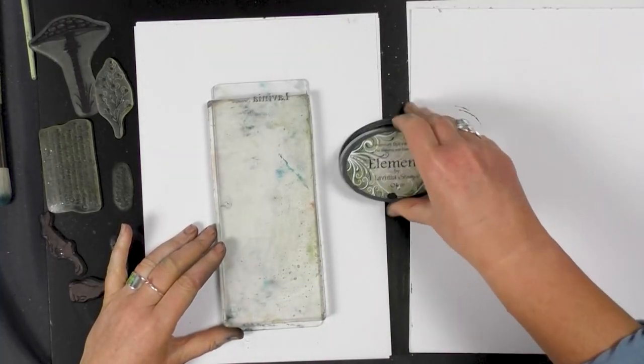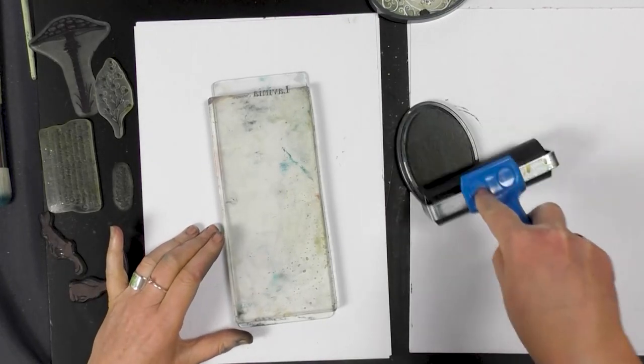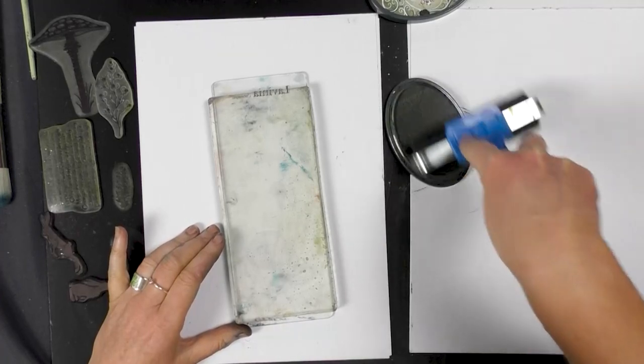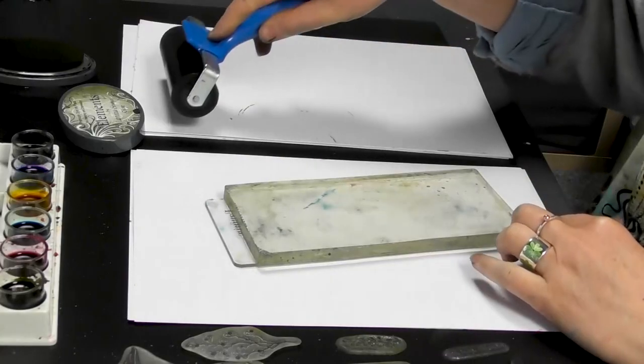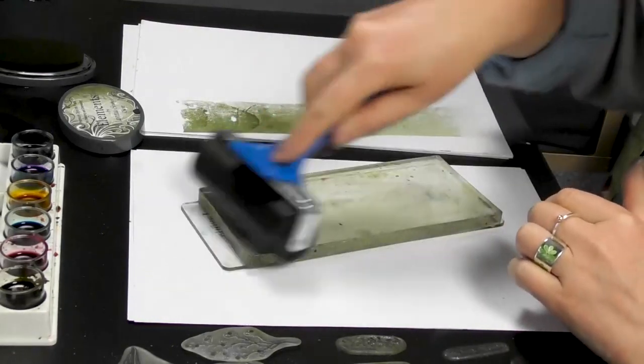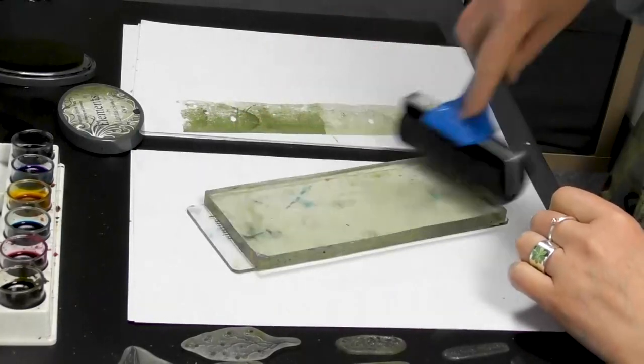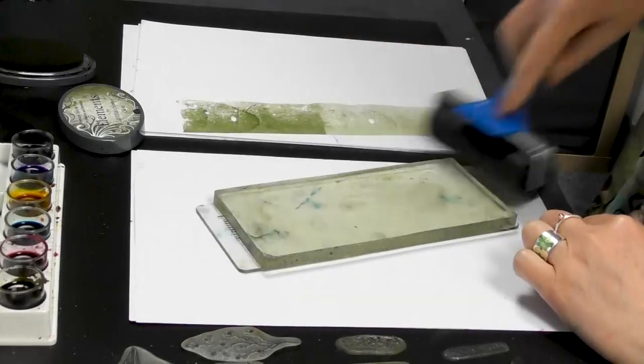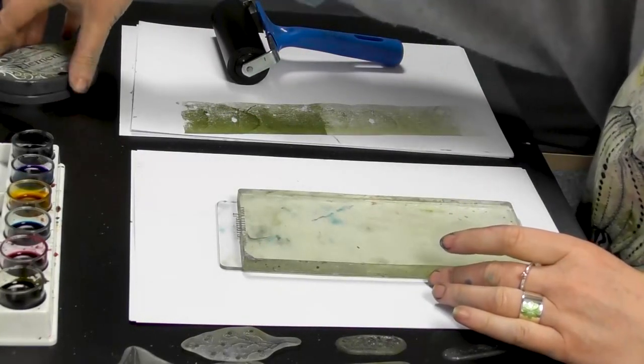Right, we've got the colour Olive here from Elements and I'm going to ink up my brayer and then I'm going to take a little bit off because it's quite a strong colour. They're all quite intense colours, very juicy ink pads so I don't need much on my gel press. That's just a base colour.